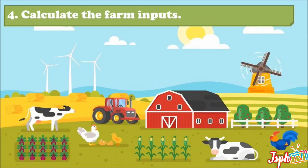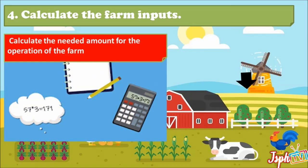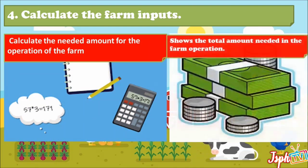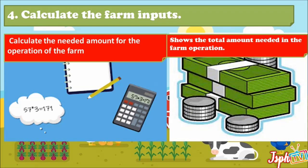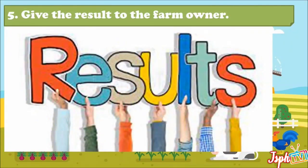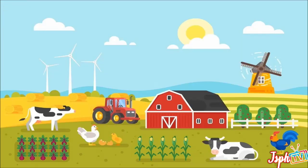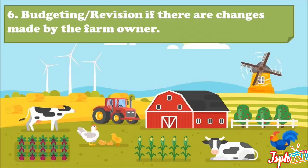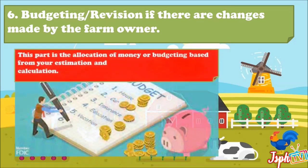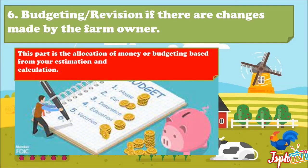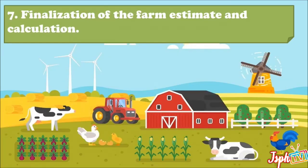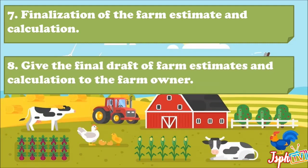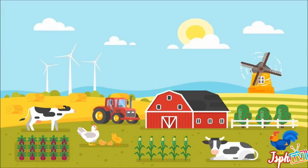Fourth, calculate the farm inputs — calculate the needed amount for the operation of the farm and compute the total amount needed. Fifth, give the result to the farm owner. Budgeting revision: if there are changes made by the farm owner, this part is the allocation of money or budgeting based on your estimation and calculation. Finalization of the Farm Estimate and Calculation: give the final draft for Farm Estimates and Calculation to the farm owner.